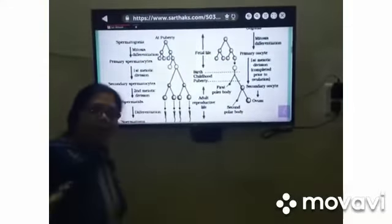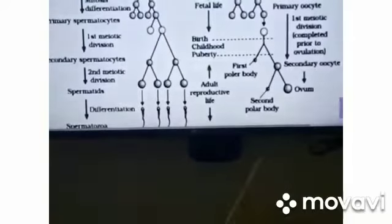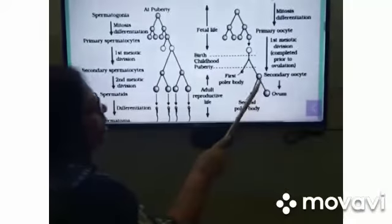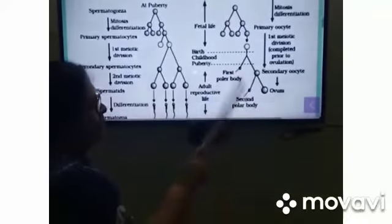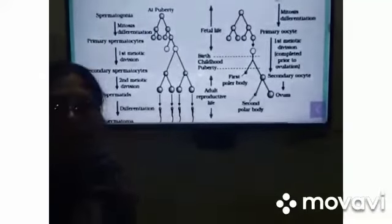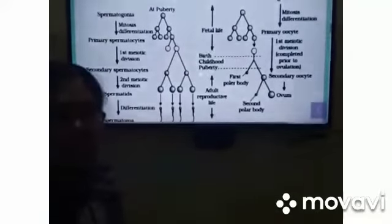Here are first and second polar body, they are small. But here, no formation of the first and second polar body is there in spermatogenesis.